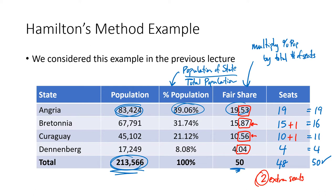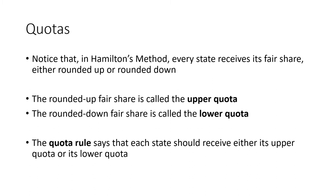So that's Hamilton's method: round everything down, then look at the decimal portions of the fair share and from highest to lowest assign whatever number of extra seats you have. Every state gets its fair share either rounded up or rounded down. The rounded-up fair share is called the upper quota and the rounded-down fair share is called the lower quota. The quota rule says that every state should get either its upper quota or its lower quota. Hamilton's method is a way of figuring out which states get the rounded-up quota and which get the rounded-down quota.